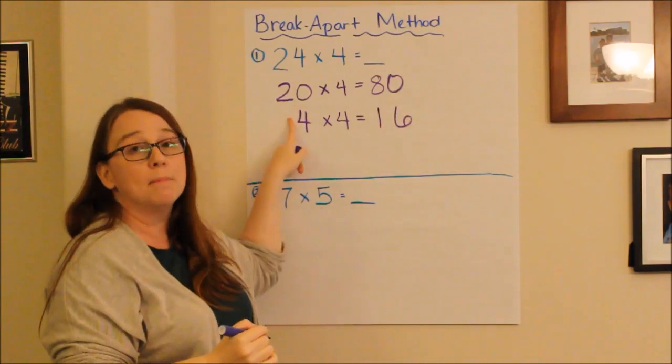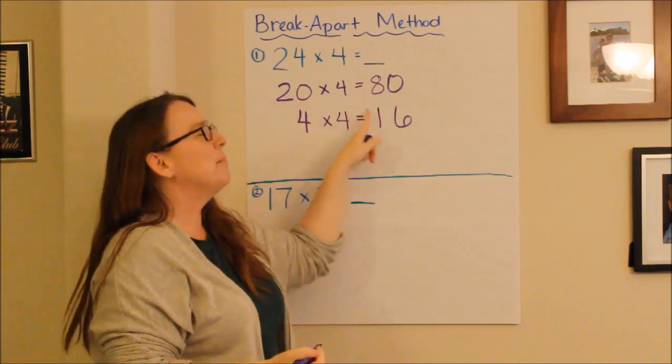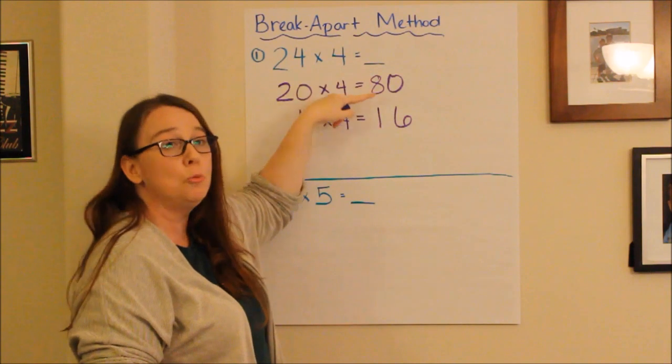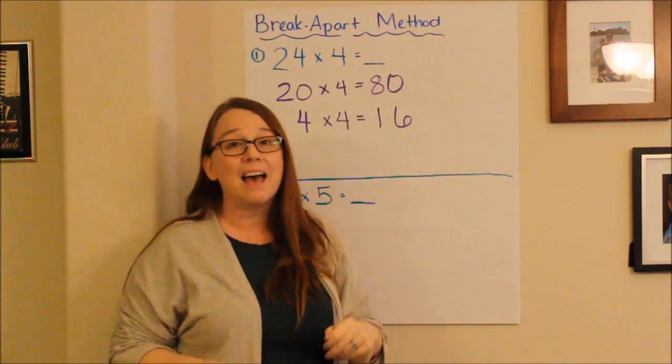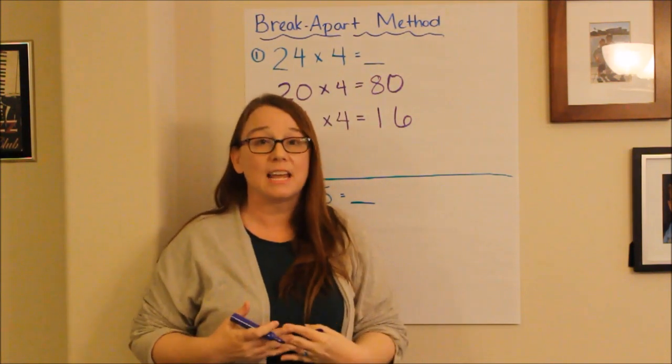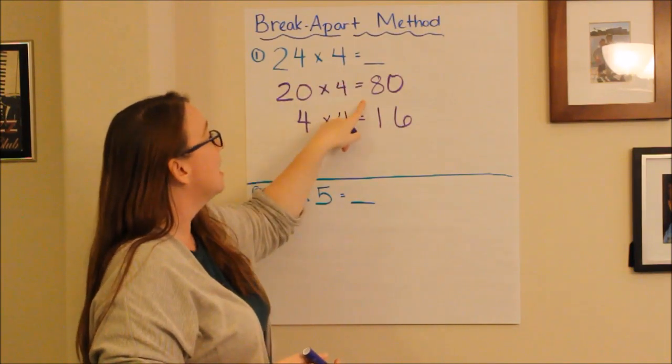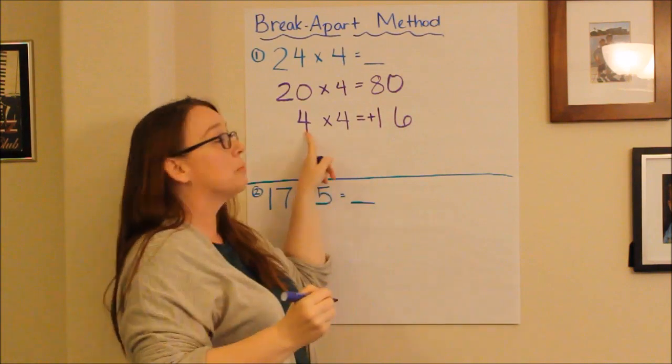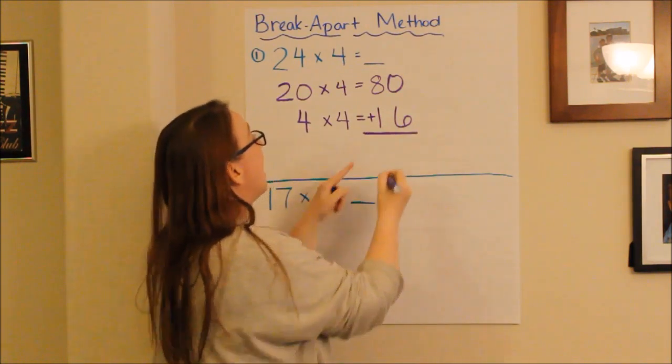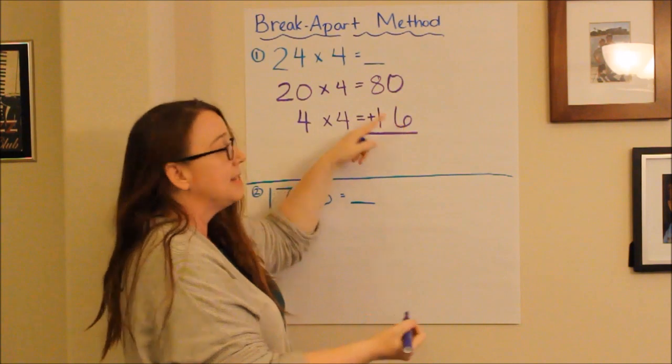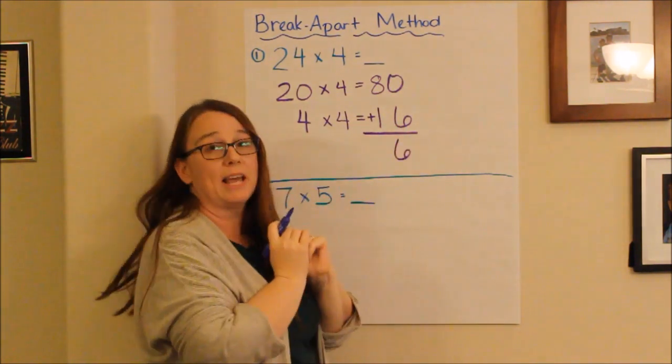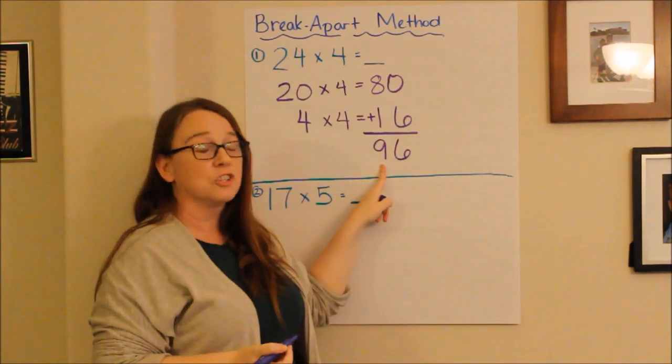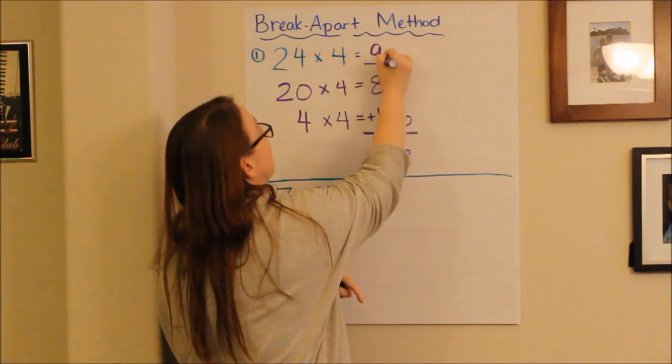Now, since I broke the number apart at the beginning, I'm going to have to put it back together at the end. So, what I do is I take my two products, and I'm going to add them up to get my final answer. So, I take the product of 20 times 4, which was 80, and I'm going to add it to the product of 4 times 4, which is 16. And 0 plus 6 is 6 in the ones place. 8 plus 1 is 9. So, my final answer would be 96.